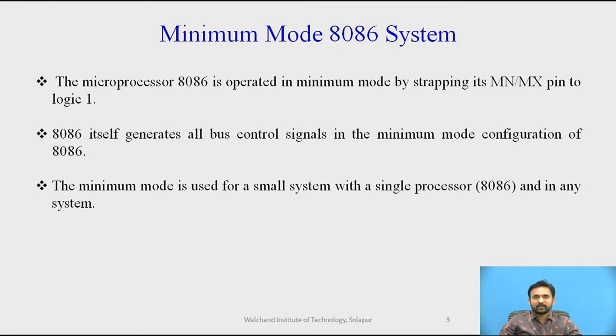There is a single microprocessor in the minimum mode system. To adapt to different situations, the 8086 processor can be operated either in the minimum or the maximum mode. The minimum mode is used for small systems with single processor.